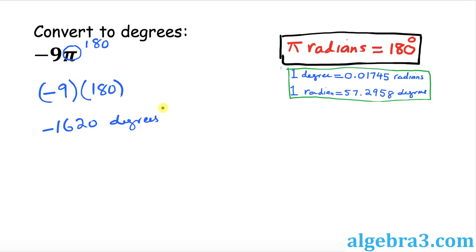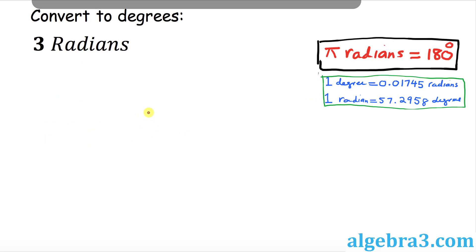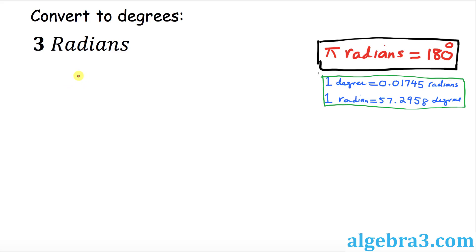In this example we've been asked to convert 3 radians to degrees. Remember, radians are always represented by pi, so pi is missing here. I'm going to show you two different ways you can convert these radians to degrees.